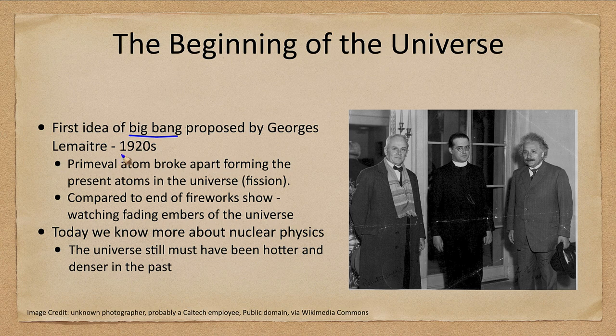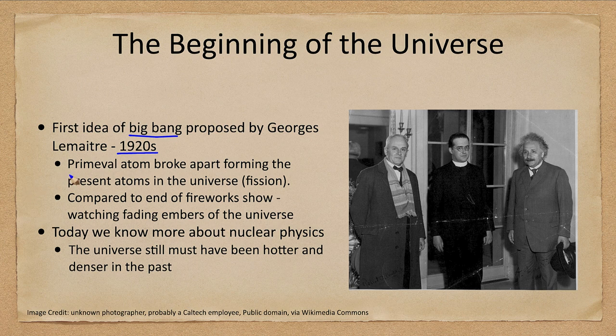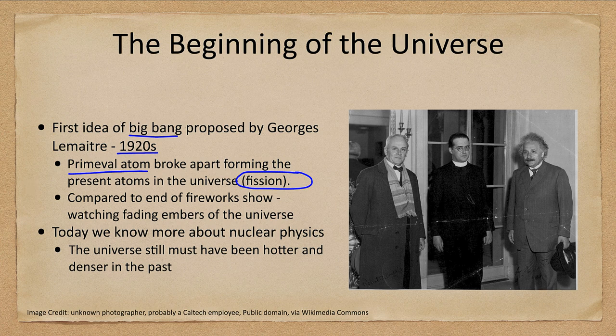Pictured here from the 1920s in the center there, and you may recognize Albert Einstein on the right side of this image as well. He had considered a primeval atom that broke apart forming the present atoms in the universe, something similar to the idea of fission that we've talked about previously with nuclear reactions—larger things breaking down into smaller ones.